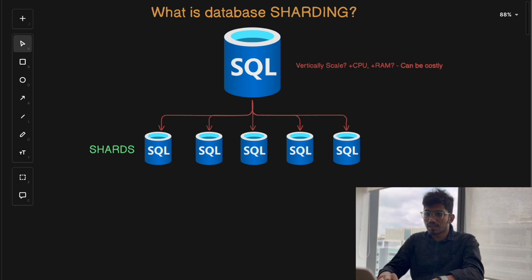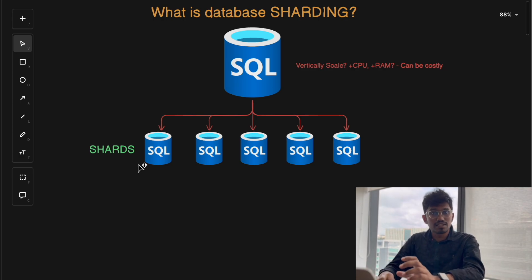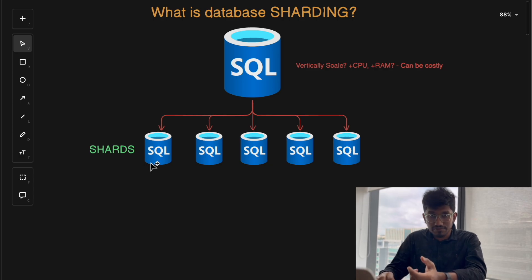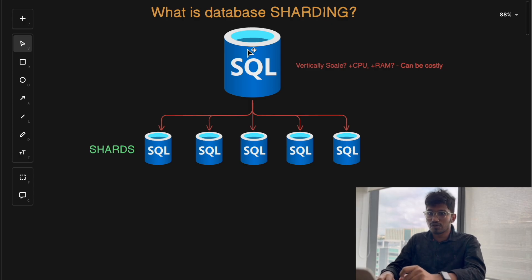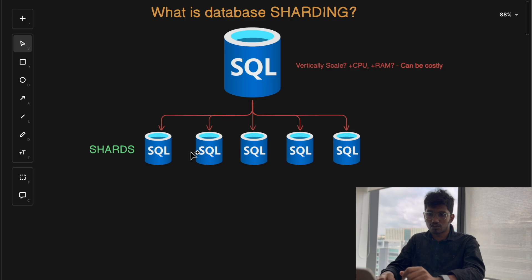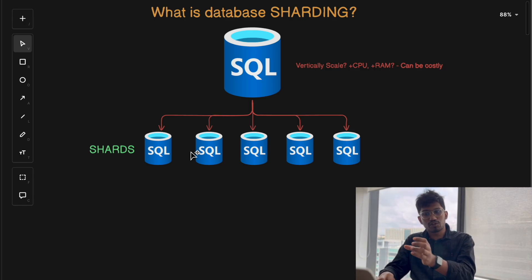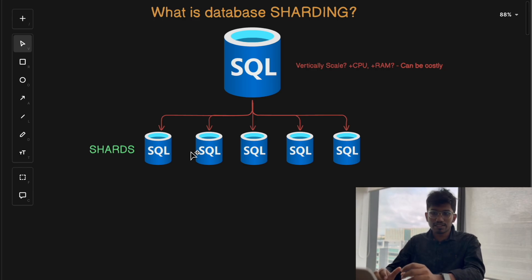Imagine you are running a huge e-commerce platform with millions of users and thousands of transactions every second. A single database instance might quickly become a bottleneck and get overwhelmed. By sharding the database, you distribute the load across multiple smaller databases, where each shard is responsible for a portion of the data.